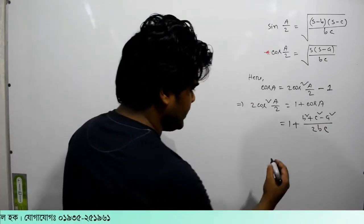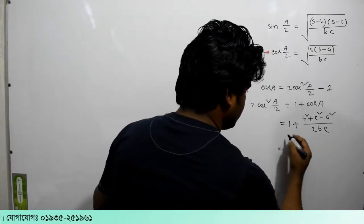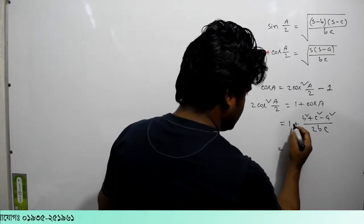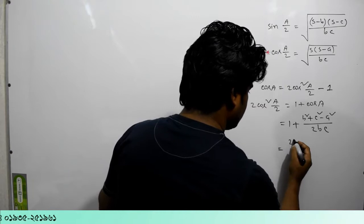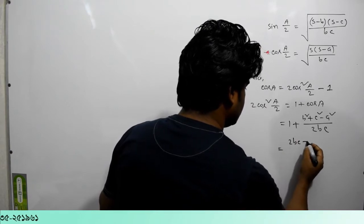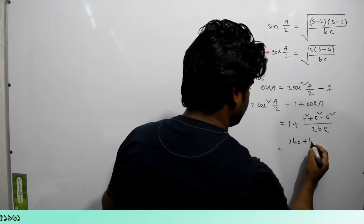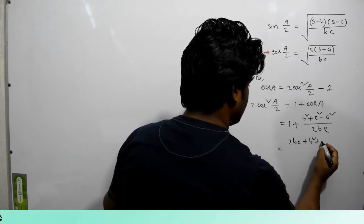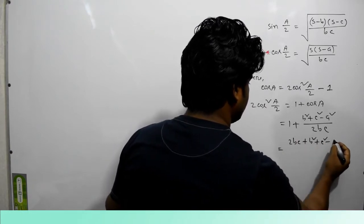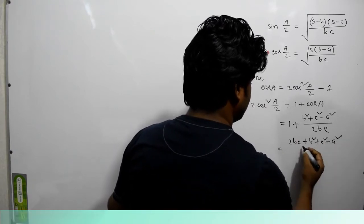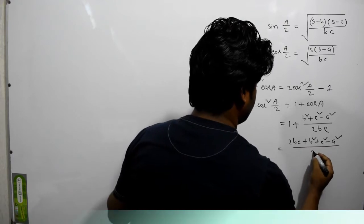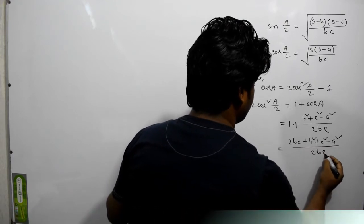It's very good. So we're going to do a bit of a rearrangement. With this rearrangement, we're going to write: 2bc plus b² plus c² minus a², all divided by 2bc.